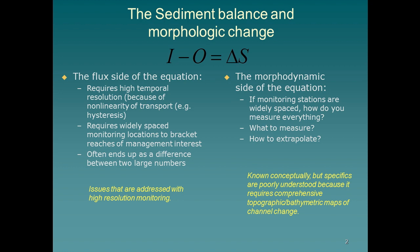Directly downstream of a dam, the input is zero. So typically what happens is bed degradation because we still have some outputs — a negative sediment mass balance and the bed degrades. Now in debris fan dominated canyons, the bed itself is locked in place by very large boulders where debris fans enter the system. So you don't really see widespread bed degradation, but rather degradation of the fine sediment deposits in pools and eddy bars.